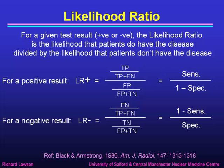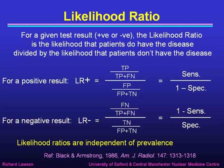We can define a likelihood ratio for the negative result in the same way, which turns out to be equal to 1 minus the sensitivity divided by the specificity. We already know that sensitivity and specificity are independent of prevalence — they don't change when you change the prevalence. And so these likelihood ratios, which are just mixtures of sensitivity and specificity, are also independent of prevalence. They are numbers that define the test and don't depend on the patients that we apply the test to.